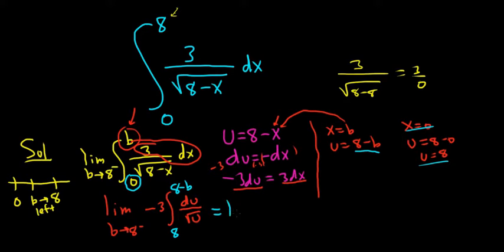All right. This is equal to the limit as B approaches 8 from the left. And now we can rewrite this integral to integrate it. This is negative 3, definite integral, 8 to 8 minus B. You can bring this upstairs. You can first write it as U to the 1 half. And when you bring it up, it becomes U to the negative 1 half DU.